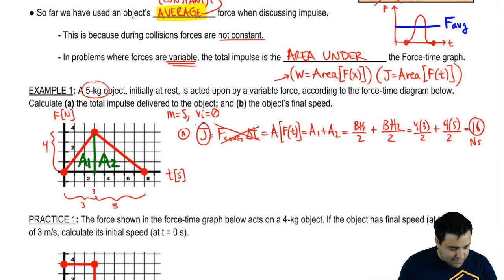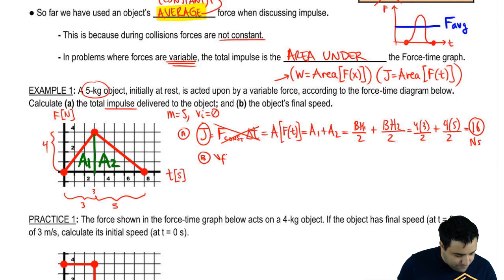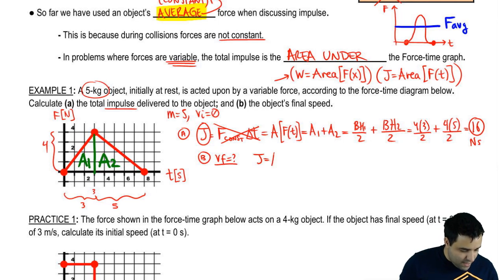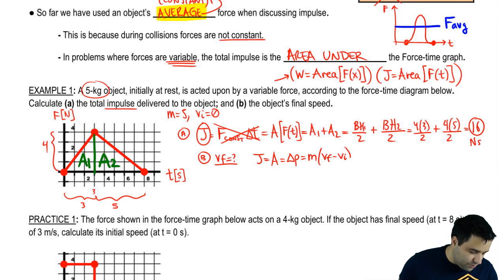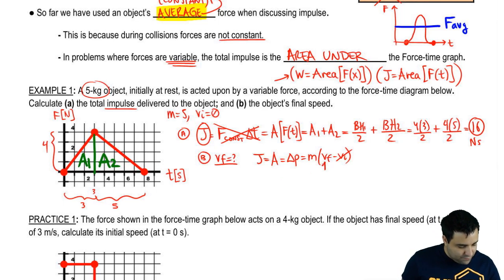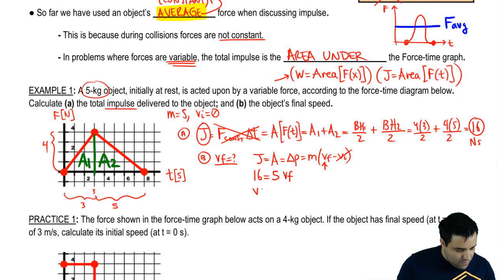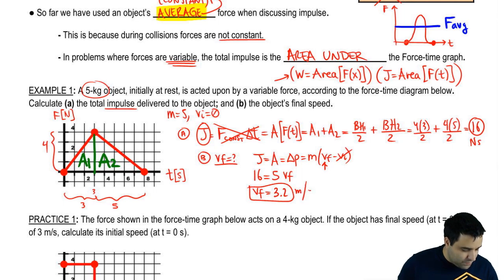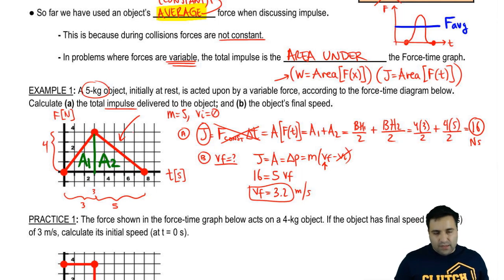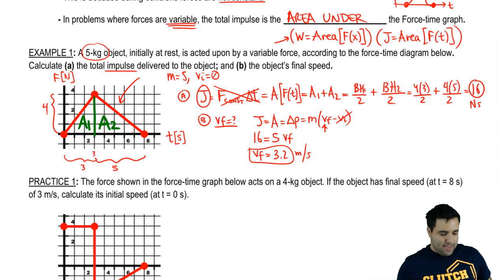The unit is Newton-seconds — that's impulse. What about the object's final speed? Now we can use the impulse equation: impulse equals delta P, or m times (v_final minus v_initial). Since v_initial is zero, impulse equals m times v_final. Impulse is 16 and mass is five, so v_final is 16 over 5 — that's 3.2 meters per second. Very straightforward. The only new thing here is calculating the area.